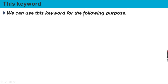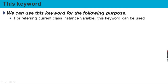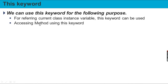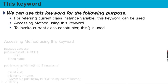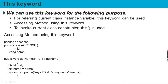We can use the 'this' keyword for the following purposes: to differentiate class variables from method variables, to access methods of the current class, and to invoke the current class constructor, as well as to pass as an object or instantiate.